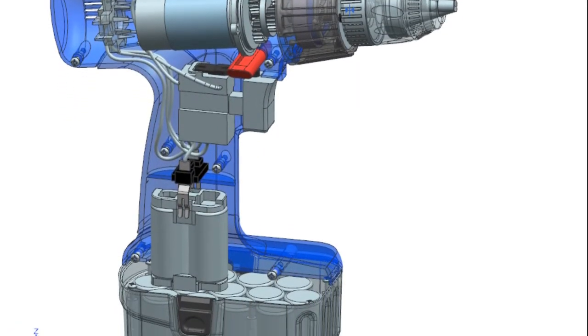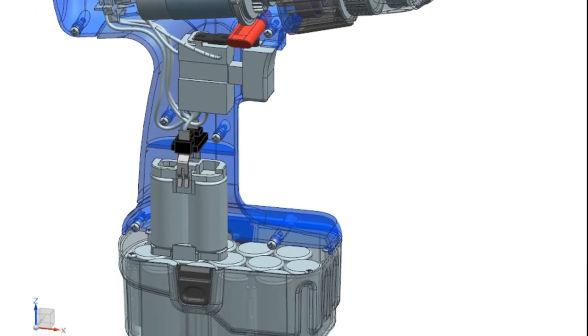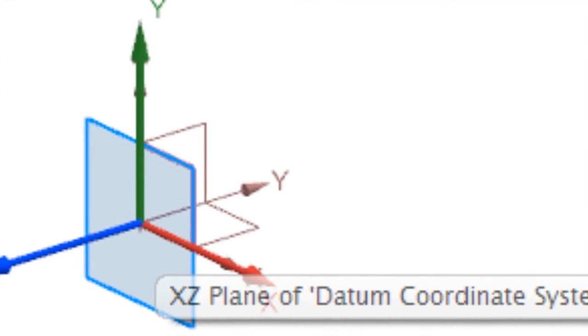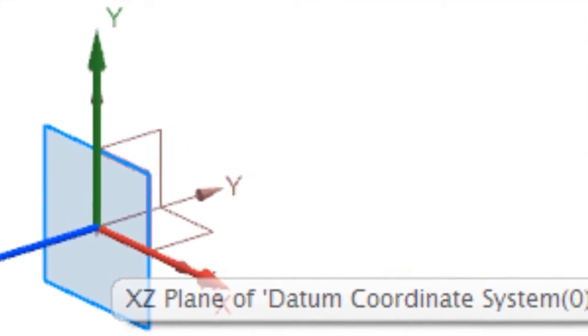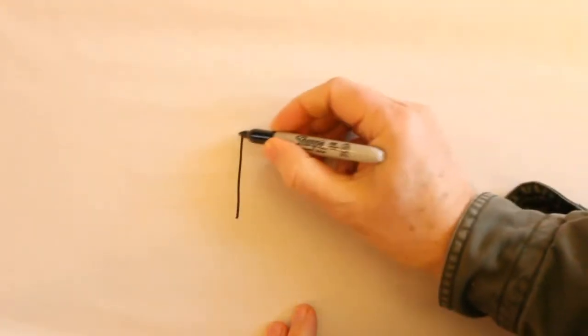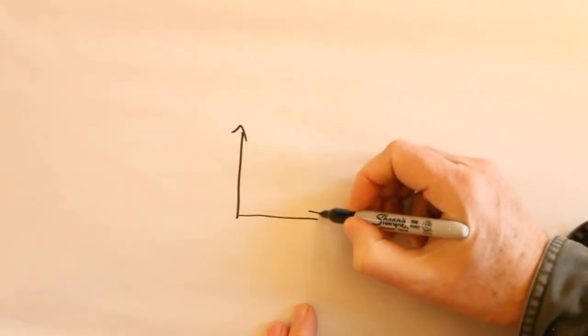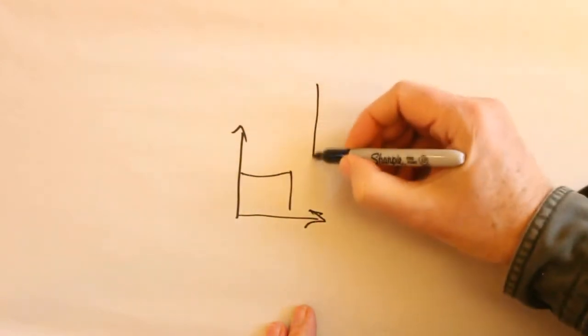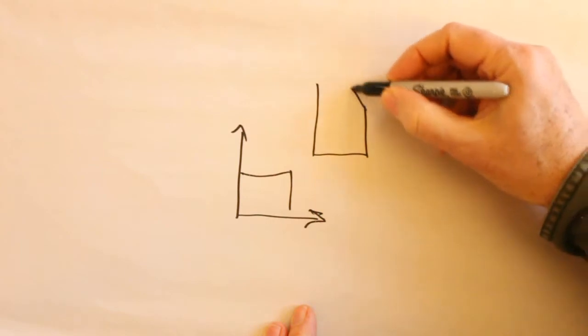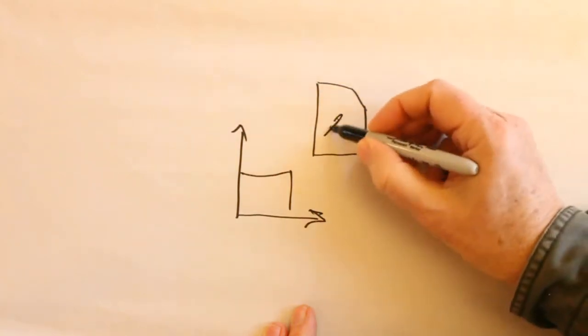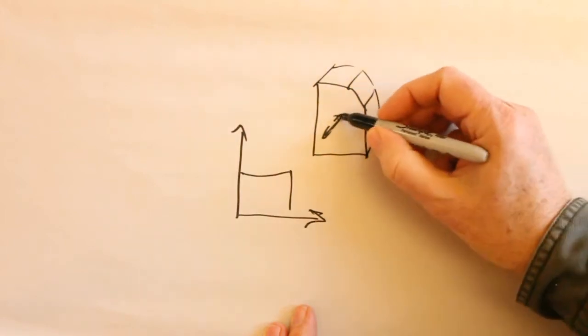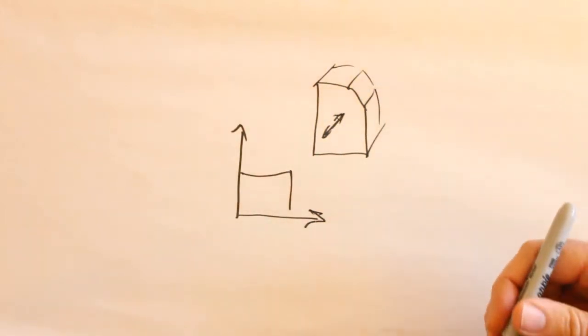When making a CAD model, your first decision is where to design the part relative to the datum coordinate system. Let's look at five different possibilities. First, a common mistake new users make is to treat the datum coordinate system like a piece of paper. They might sketch on one of the datum planes in the upper right quadrant. Two problems with this are additional datums might be required later for symmetry, and this makes no statement of design intent in the model.